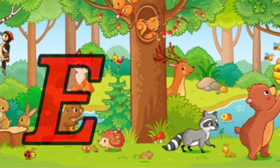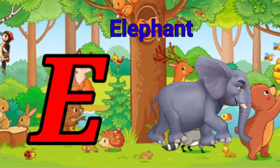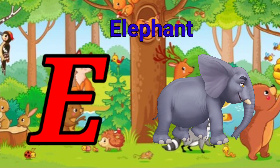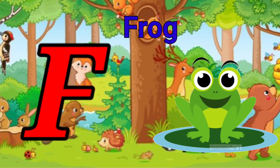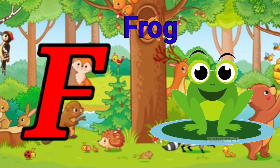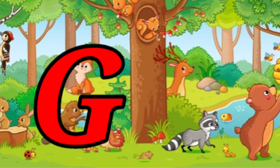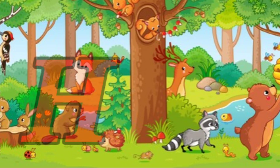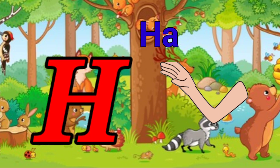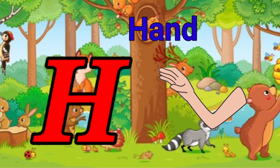E is for elephant, e-e-elephant. F is for frog, f-f-frog. G is for goat, g-g-goat. H is for hand, h-h-hand.